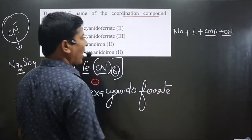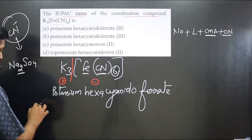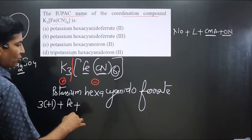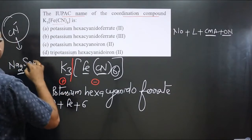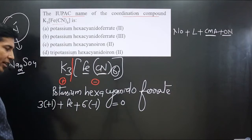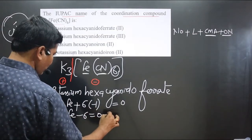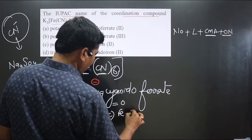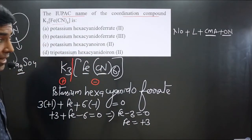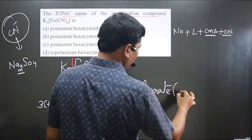Then we write the oxidation number of the central metal atom. We calculate it because this is a neutral complex. Three potassium ions, each with a +1 charge, give +3. Iron has an unknown oxidation number. Six cyanide ions each have a −1 charge, giving −6. So: +3 + Fe + (−6) = 0, which gives Fe − 3 = 0, so iron is in the +3 oxidation state. We write the oxidation number in Roman numerals: III.